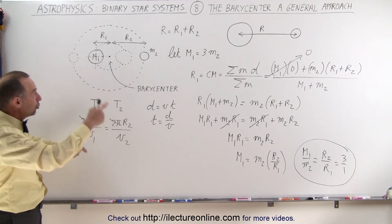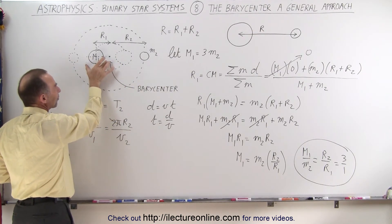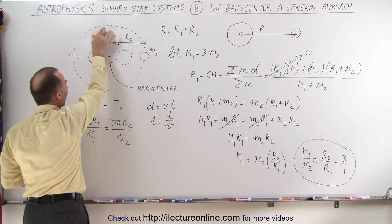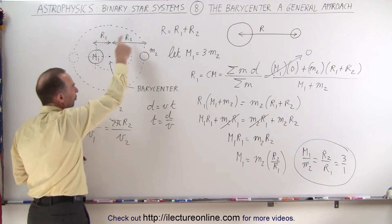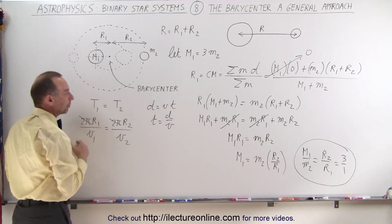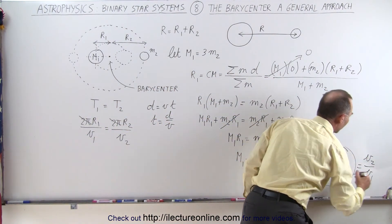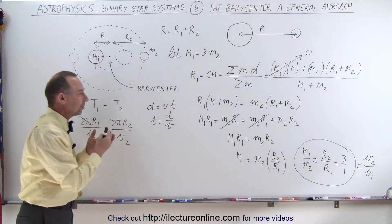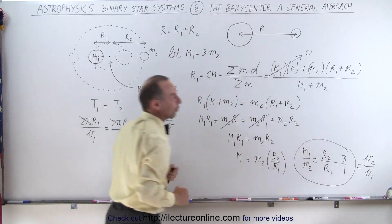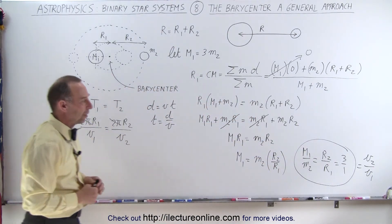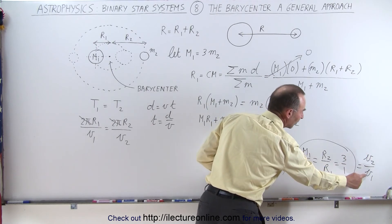So when two objects orbit around the barycenter, if M1 is 5 times the mass of M2, then R2 will be 5 times the distance of R1, and as they revolve around the barycenter the velocity of the smaller object — since it has to travel farther — will be an equal ratio bigger than v1. The ratio R2 over R1 equals the ratio v2 over v1. So not only do the radii follow the inverse mass ratio, the velocities follow that same inverse relationship. Since M1 is 3 times M2, R2 is 3 times R1, and v2 is 3 times v1.